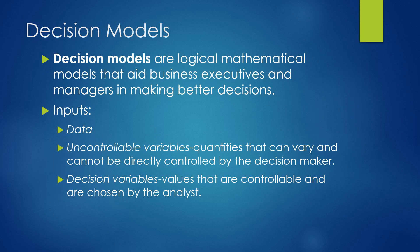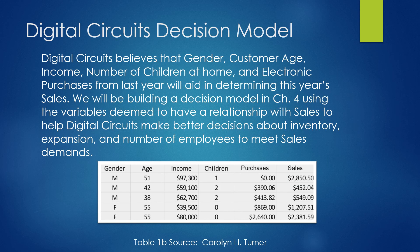Decision models are logical mathematical models that aid executives and managers in making better decisions. Inputs include data, and uncontrollable variables are quantities that can vary that we couldn't know exact amounts of beforehand. Decision variables are controllable variables that the analyst could know. For Digital Circuits, the decision model variables include the gender of the customer, their age, income, number of children, purchases made last year in dollars, and sales from this year.